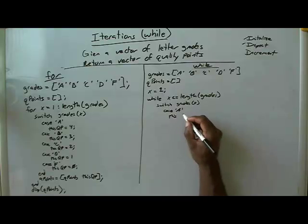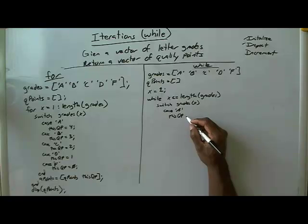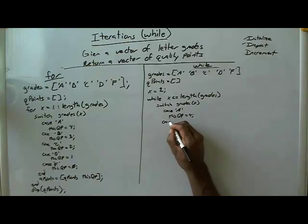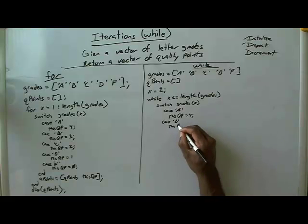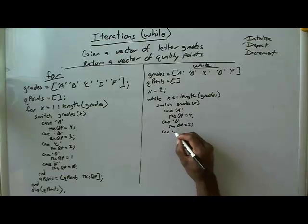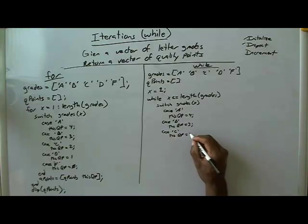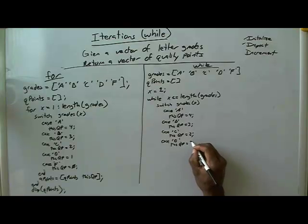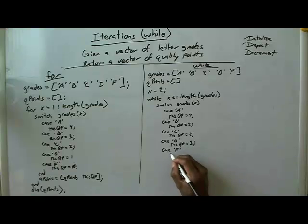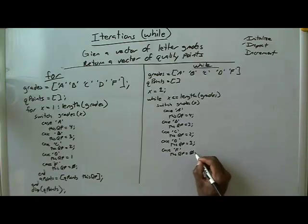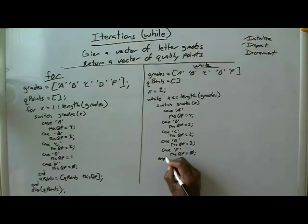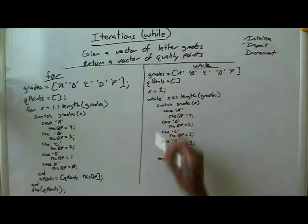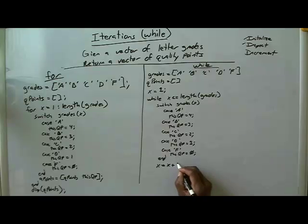As I said in the last video, this is a good time to try your implementation and then come back to see what I've completed. Case A: this QP equals 4. Case B: this QP equals 3. Case C: this QP equals 2. Case D: this QP equals 1. Case F: this QP equals 0. Then I end my switch statement. Now here's the difference — I must do my incrementing, so I put X equals X plus 1, and that handles my incrementing. Then I end my while loop.